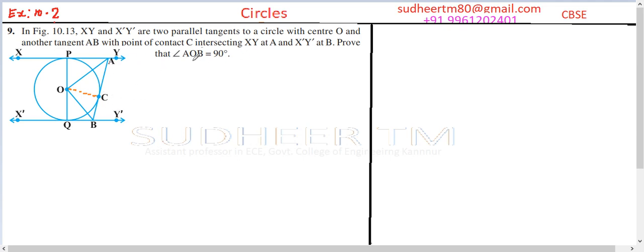We need to prove that angle AOB is equal to 90 degrees. Let us consider these two triangles, triangle 1 and triangle 2.